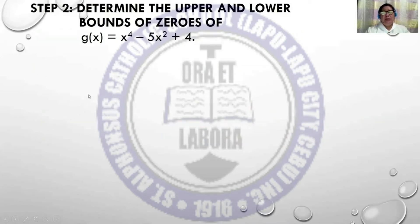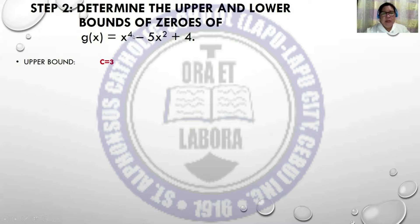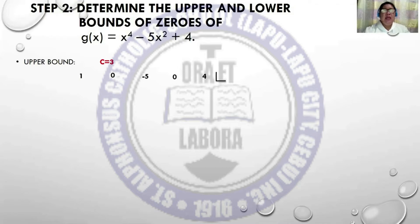For Step 2, determine the upper and lower bounds of zeros of the given function. For the upper bound, we have c = 3. Identify the coefficients of the given function. Check the exponents — we have degree 4, so there is a missing term with exponent 3, followed by exponent 2, and no term with exponent 1. The coefficients are 1, 0, -5, 0, and 4, with c = +3.